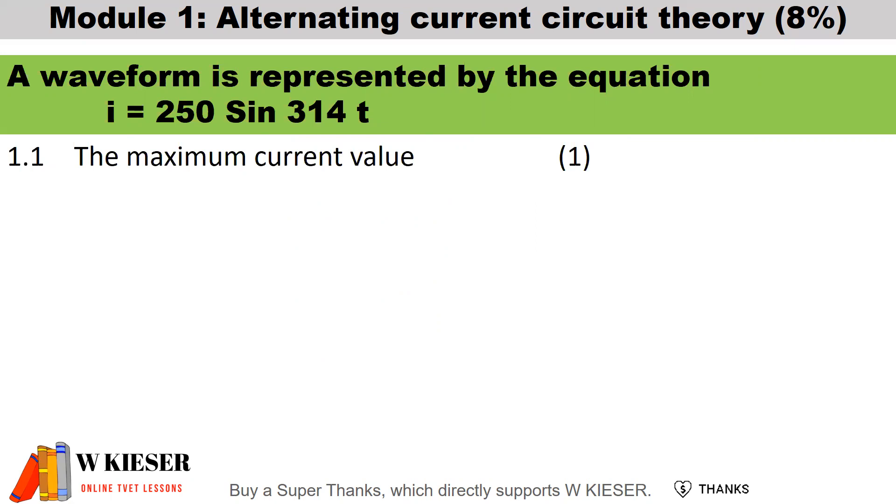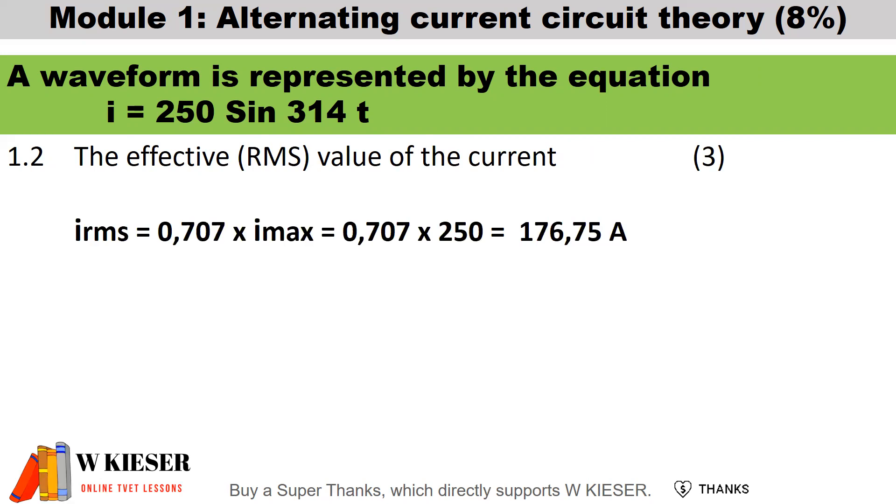A waveform is represented by the equation, and here we have the instantaneous value, which is equal to 250 sin 314 times time. To determine the maximum current value of this waveform, it is 250 amps. The effective or RMS value of the current is calculated as 0.707 multiplied by the maximum value of 250, and therefore the effective value is 176.75 amps.